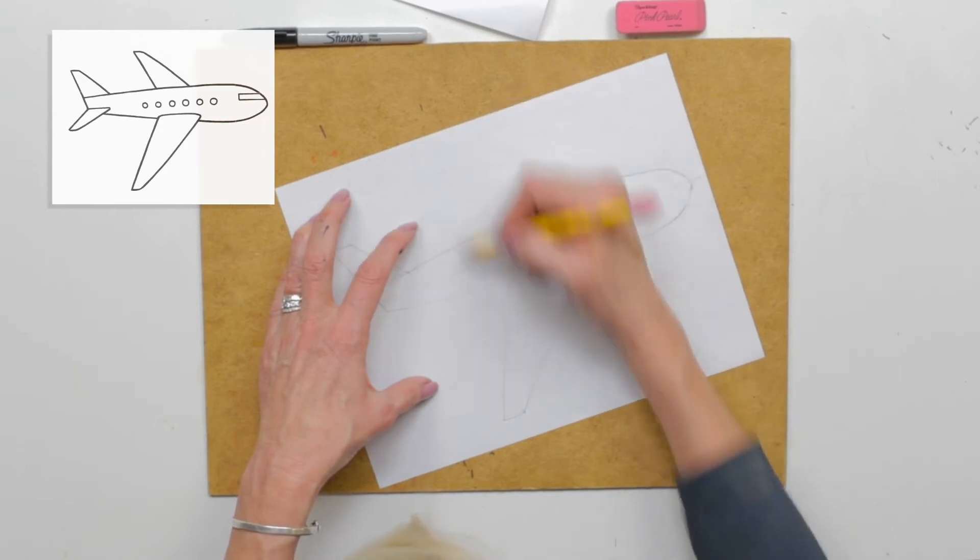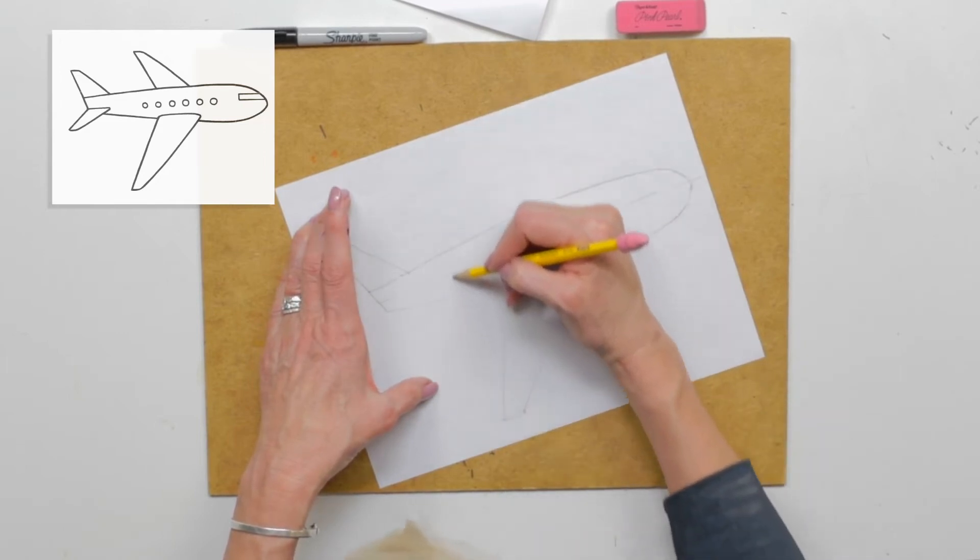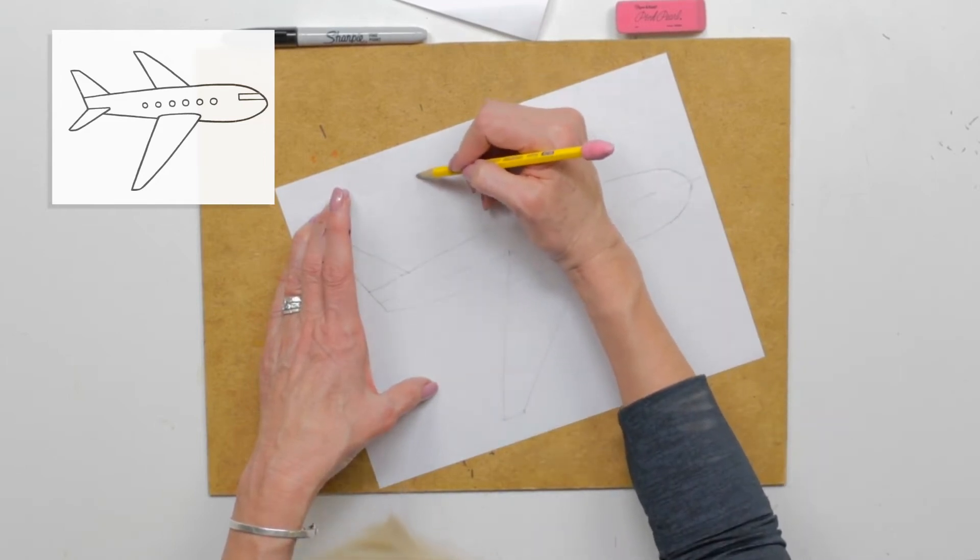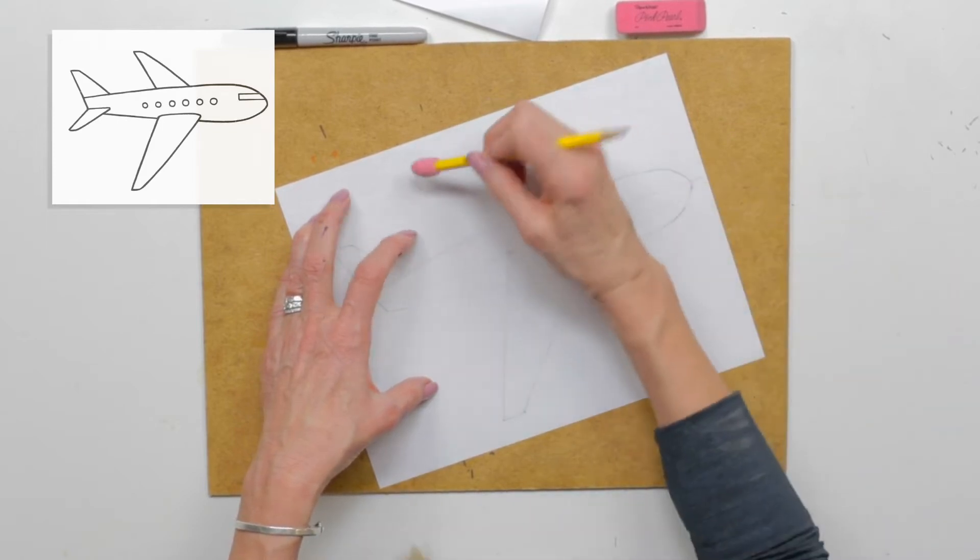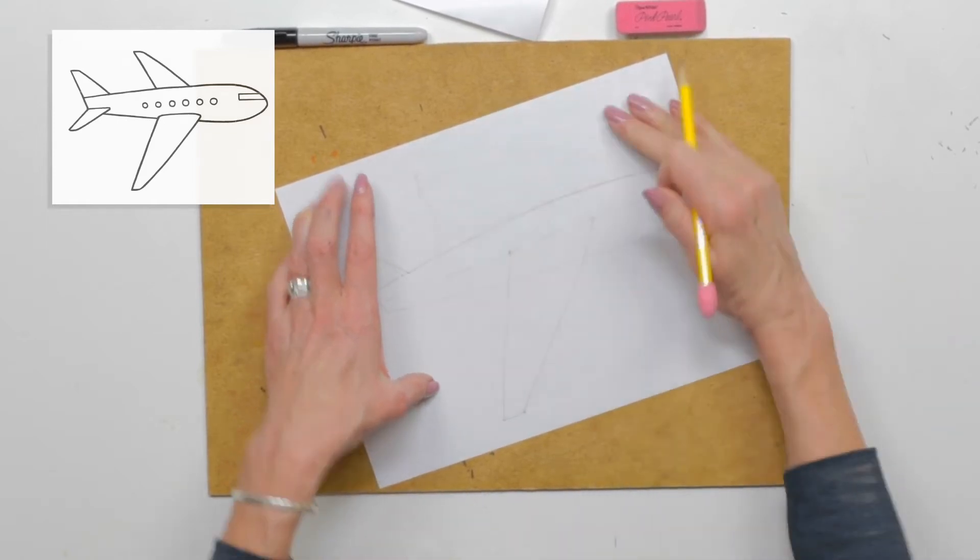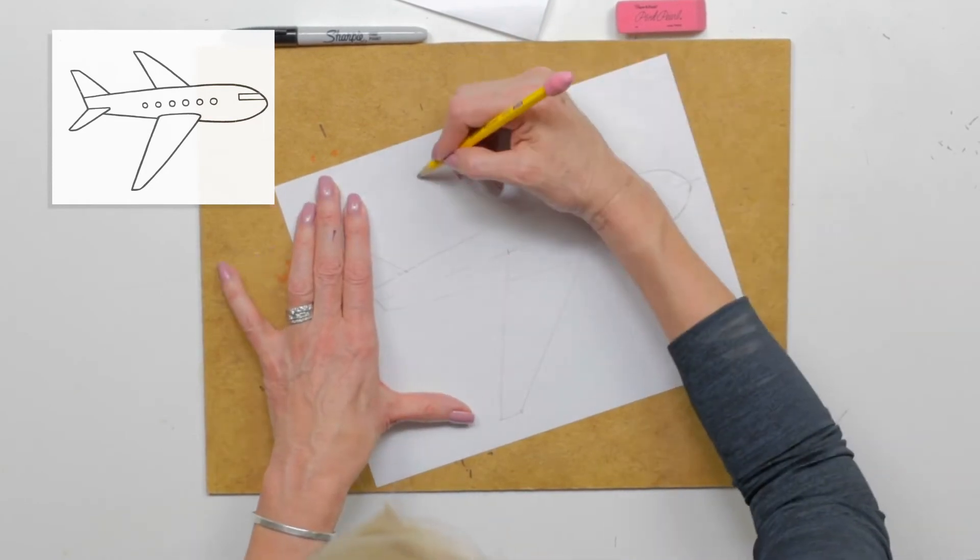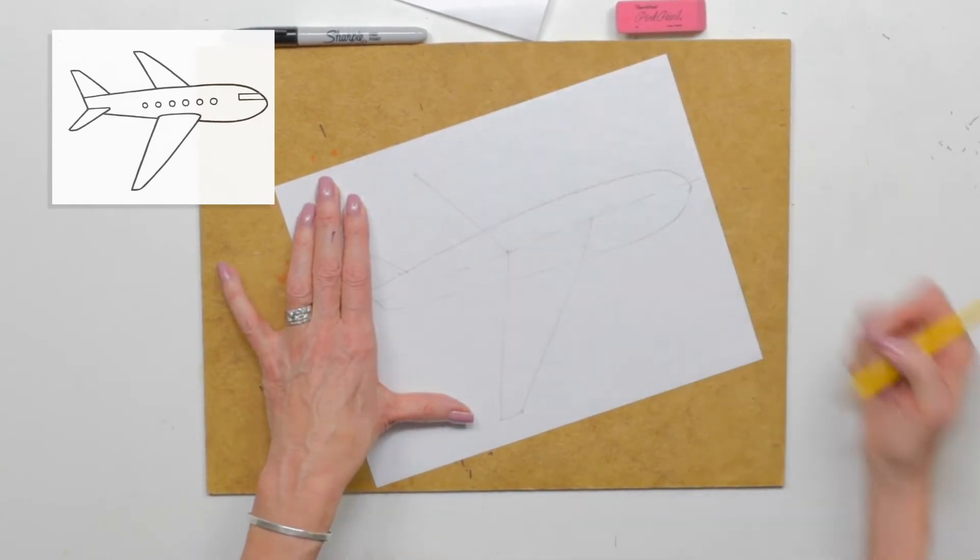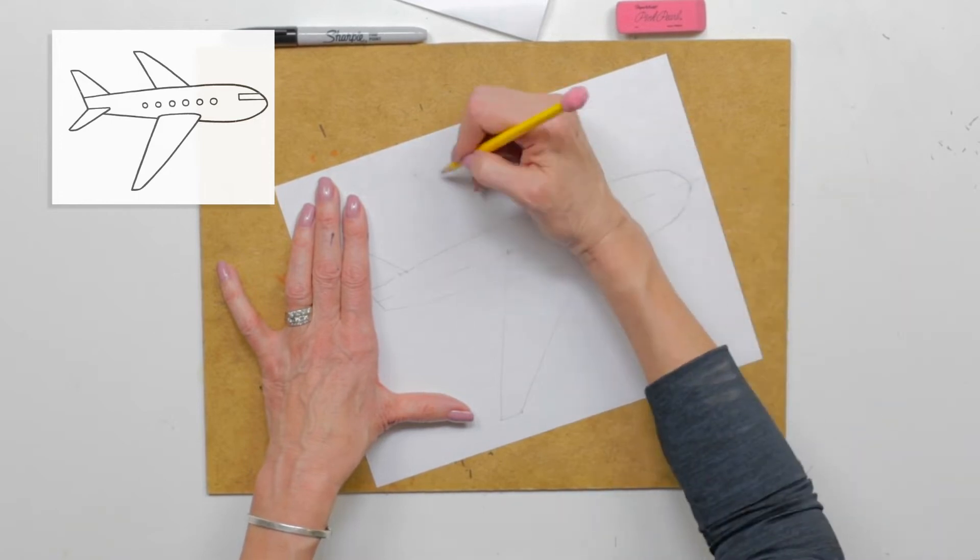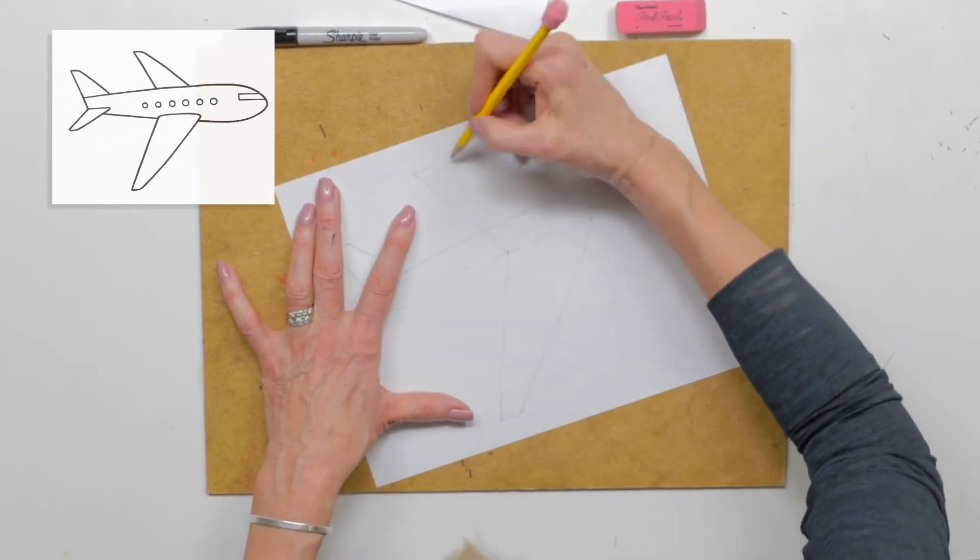Now, here's the tricky part. We're going to go all the way straight up. And right about here, I'm going to start my back wing. So watch this. I want to get back to here. I'm going to go like this. There we go. Now, I'm going to do a little short end of a wing. This one's not as long because it's on the other side of the plane.